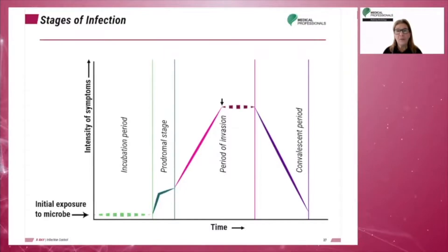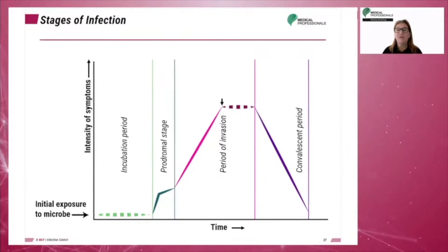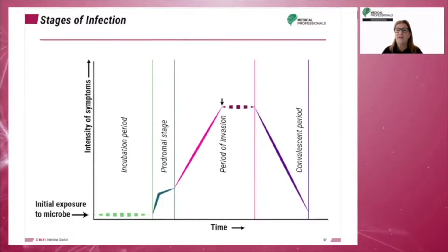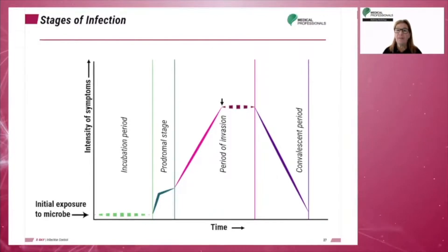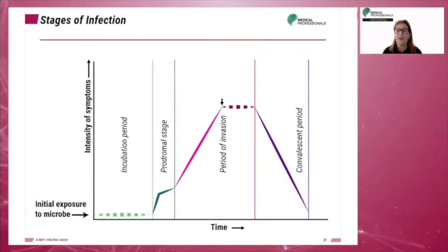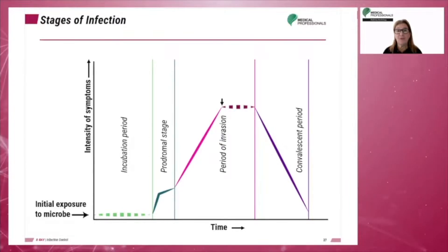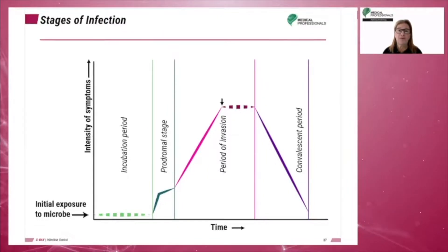There are four stages of infection. The first is the latent period, during which there are no symptoms. The next stage is the incubation period — the time that the host's defenses are being overcome until a substantial population of microorganisms has been achieved. The microbe has multiplied enough for symptoms of the disease to appear. This period is also referred to as the prodromal stage.